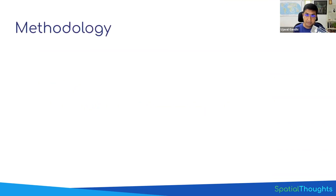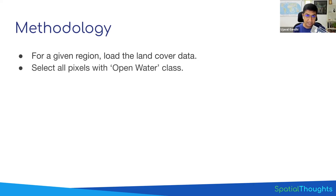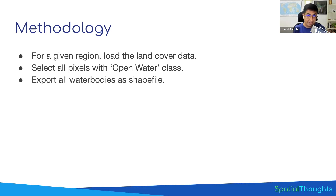In part two, we will extract a specific class value. We'll say we want to extract all water bodies and create a map of water bodies in the given region. So we'll select all the pixels that have a particular value, then take this and convert it to vector data. We have a raster layer, we'll convert it to vector, and we'll export this as a shapefile, giving you a vector layer showing all the water bodies in a given region.